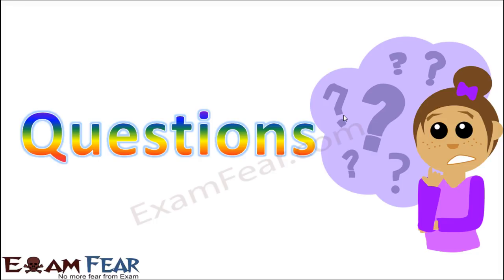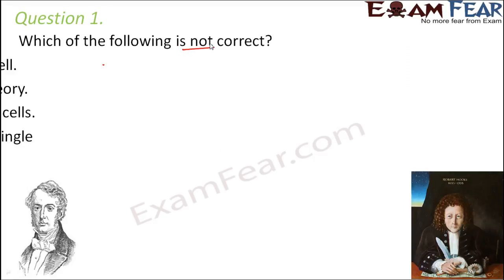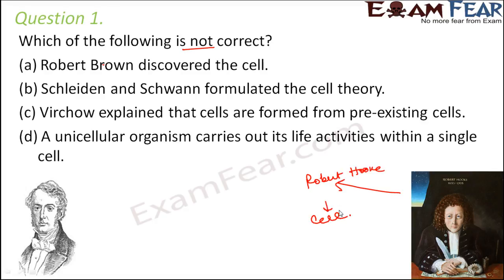Now it is question time — let us check how much you understood. Question one says: which of the following is not correct? Robert Brown discovered the cell. The person on the right side of the screen is Robert Hooke, and Robert Hooke discovered the cell. Much later, the scientist Robert Brown discovered the nucleus. Since both are Roberts, people can get confused. So the statement 'Robert Brown discovered the cell' is not correct.